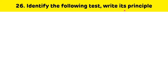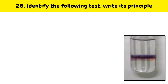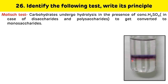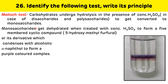Identify the following test and write its principle. A purple or violet color ring is seen at the junction of two liquids. This is the Molisch test, the primary test done for carbohydrates. Carbohydrates undergo hydrolysis in the presence of concentrated H₂SO₄ to form monosaccharides, which then get dehydrated to form 5-hydroxymethyl furfural, which condenses with alcoholic alpha-naphthol to form a purple color complex at the junction of the two liquids.